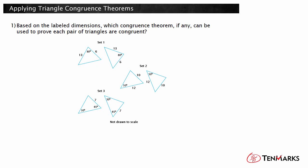The triangles in set 1 have two pairs of congruent sides and a pair of congruent angles. Because the congruent angles are the included angles for the congruent sides, we can say the two triangles are congruent by the side-angle-side triangle congruence theorem.